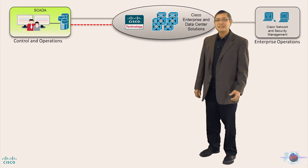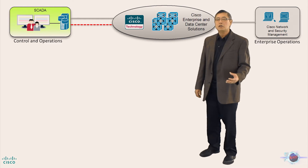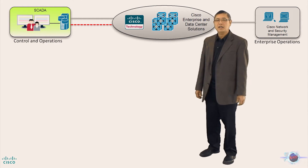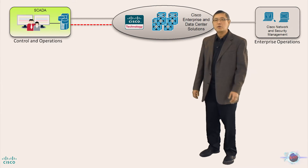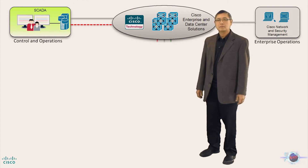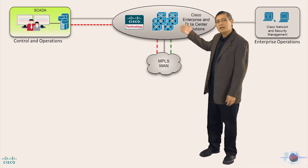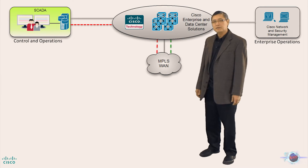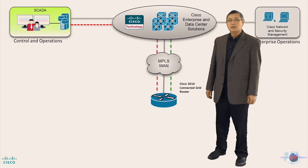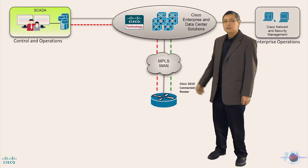In order to send and receive critical data in real time, utilities need to have a reliable and secure communication infrastructure in place. This will support the ever-growing data traffic to and from the substations. In this architecture, we will be using a private MPLS core for communication within the substation. Let's take a deeper look into the substation.